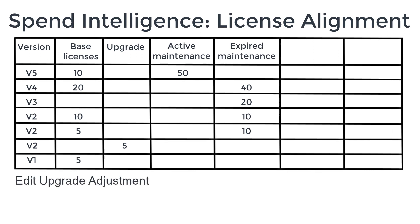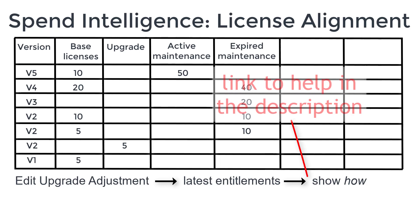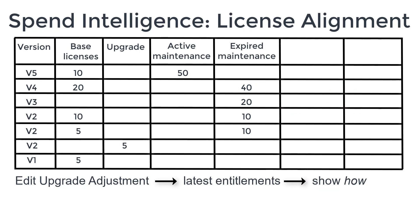The edit upgrade adjustment feature of the license manager component of Ivanti Neurons for Spend Intelligence helps you to take this transaction information and determine what your latest entitlements are for a software title — and as importantly, it will help you show how you have that entitlement. I'm not going to demonstrate how to use this feature in the software itself; I'll put a link in the description to the help that will explain how to do it. In this video I want us to concentrate on the concepts so that you understand what we're trying to achieve.